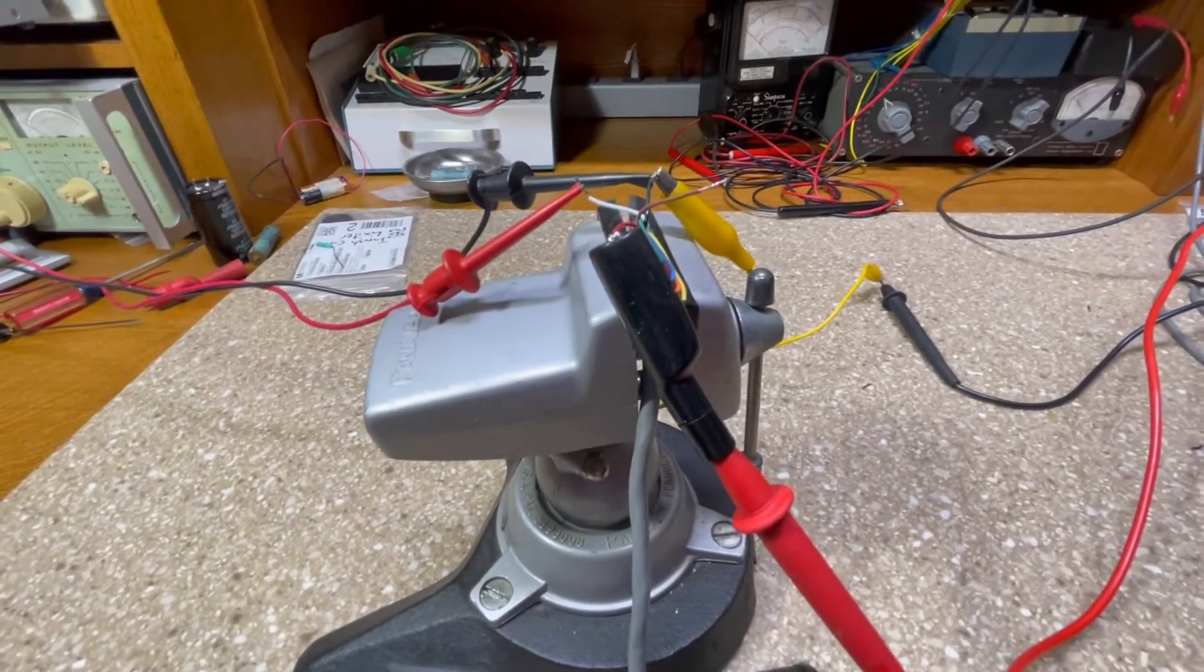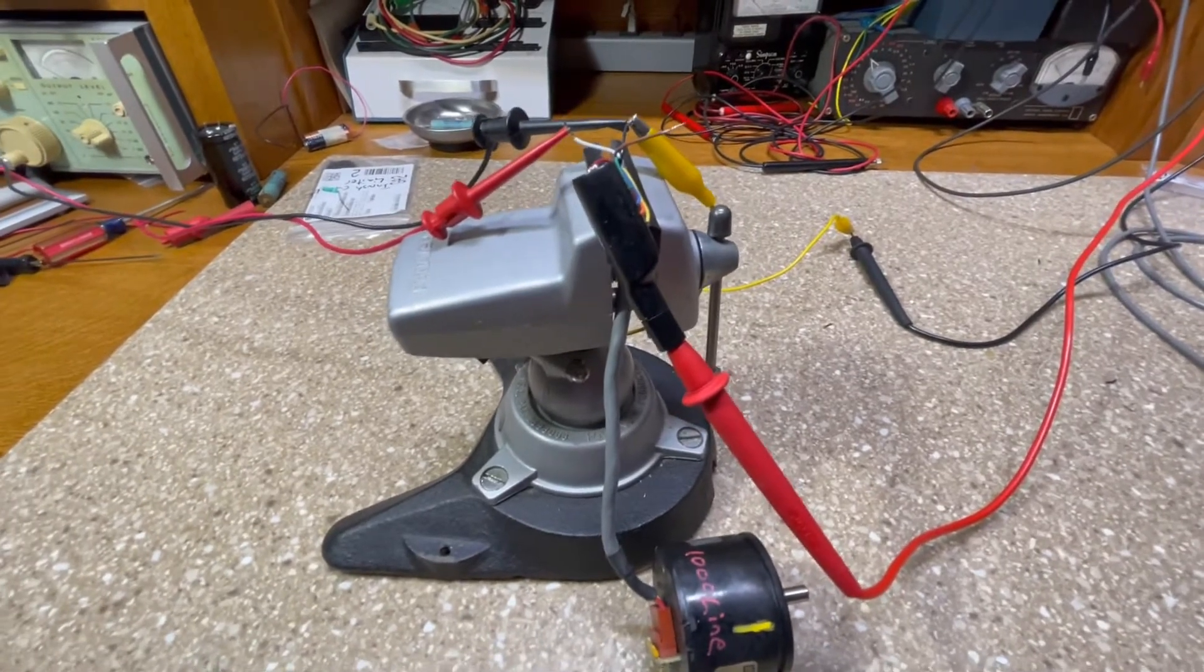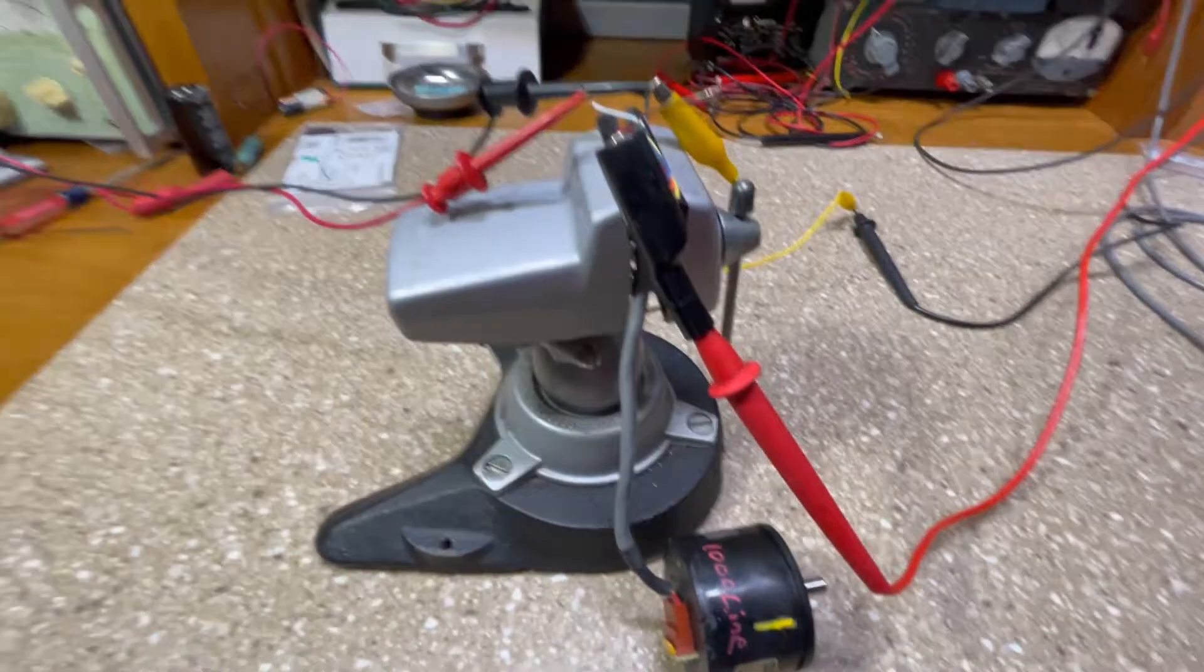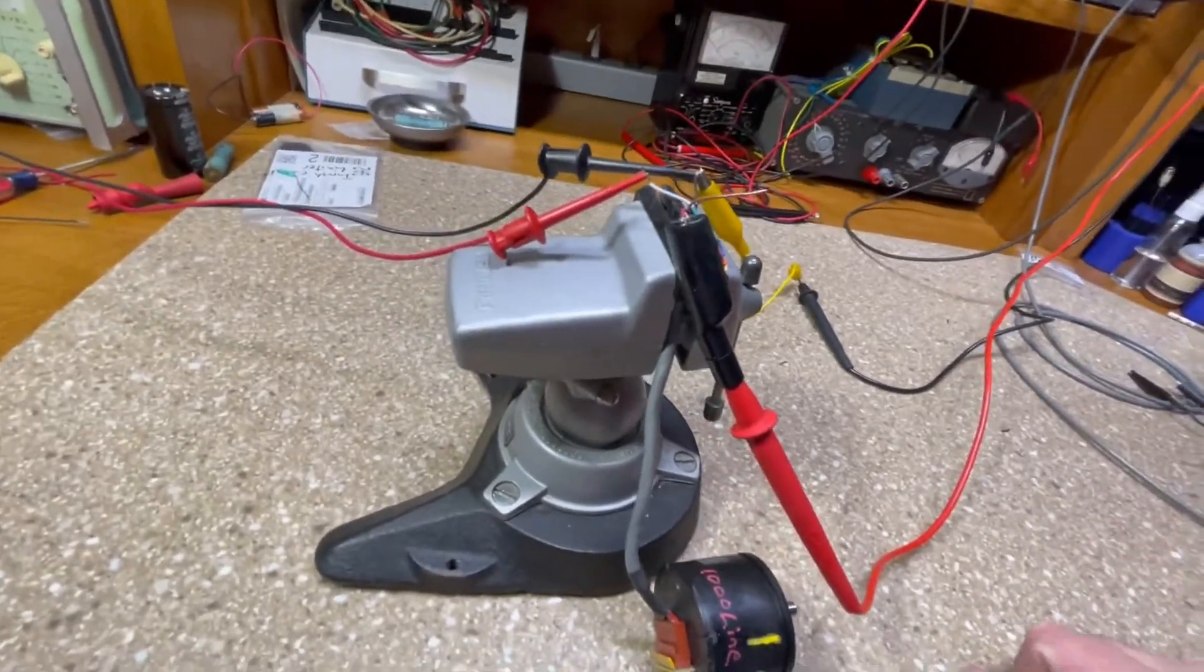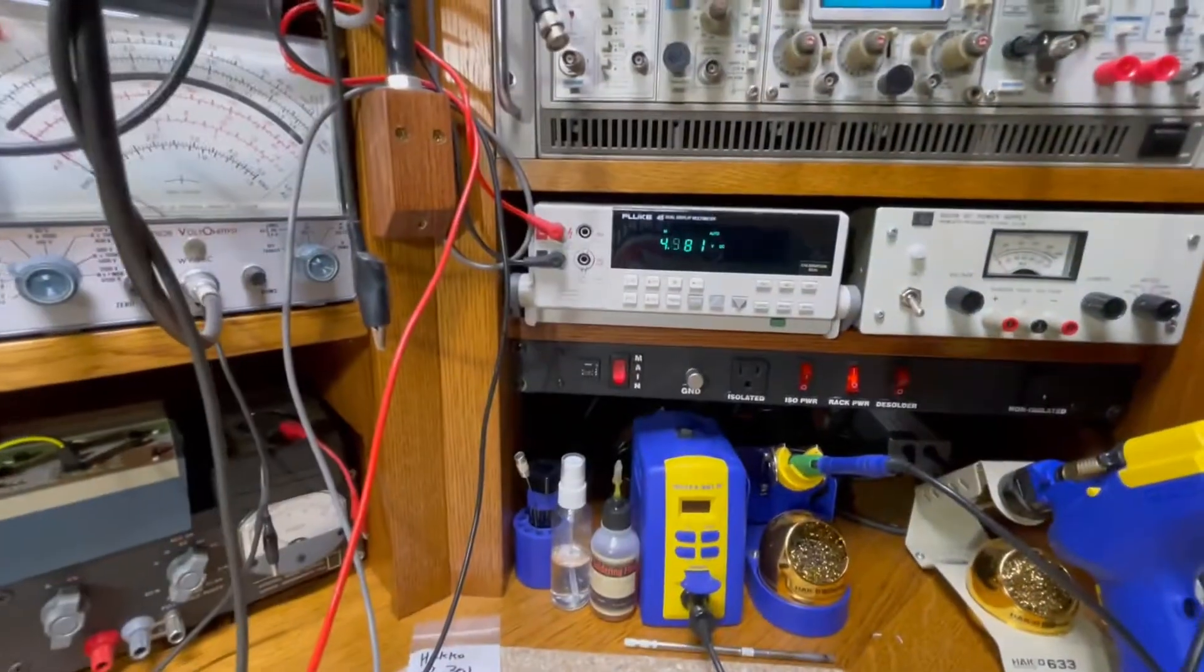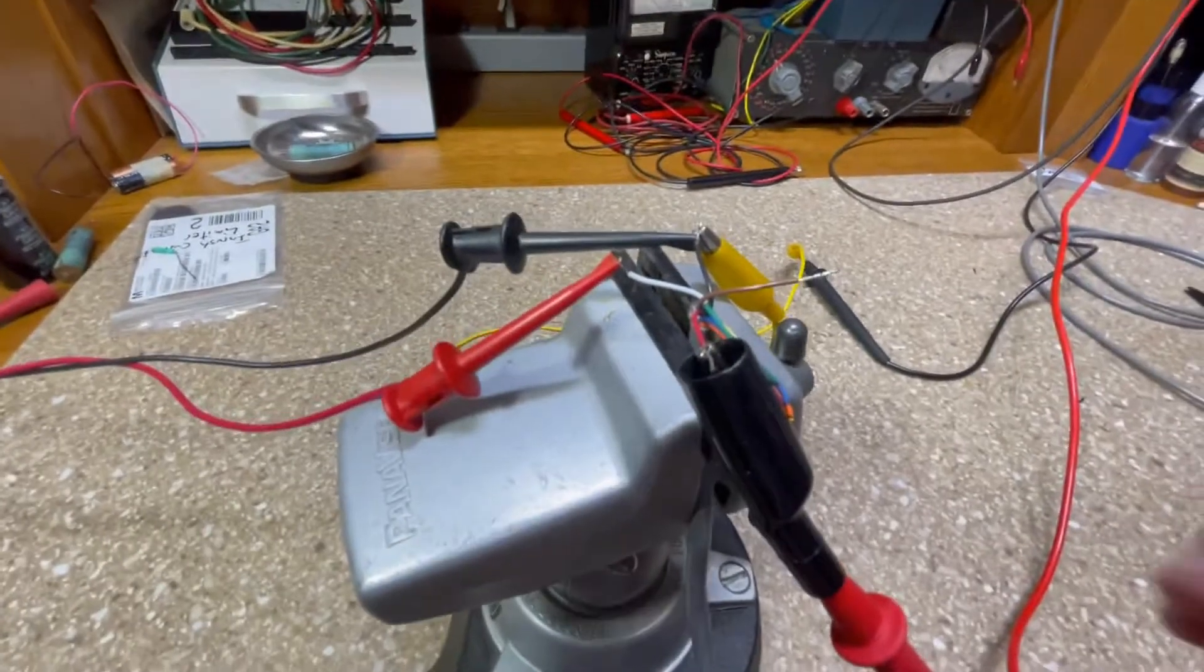But usually I find when I'm working on TTL that they're much closer to zero and five than that, but there is a range for a low and high. So right now I'm on a high, 4.98 volts, so my A is high. 4.9 volts.